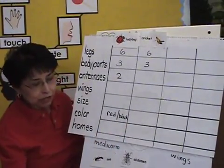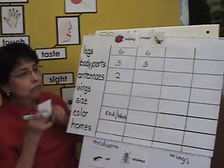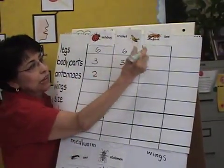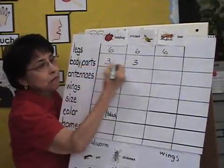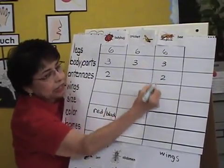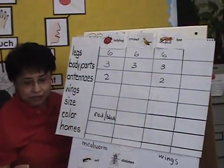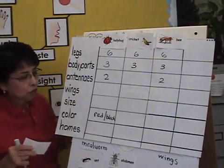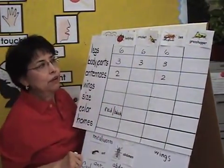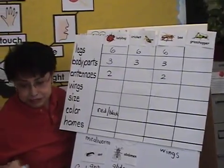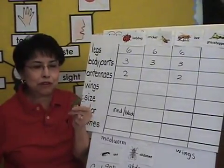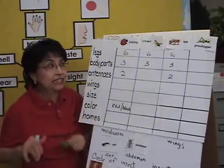And from there, let's move on to the bee. How many legs does the bee have? Six. How many body parts does the bee have? Three. How many antennas? Two. Continue to write everything down. And I'm going to show you one more — the grasshopper. Look at the grasshopper. How many legs does a grasshopper have? Everybody can raise their grasshopper up as they're observing it. The grasshopper has six legs.